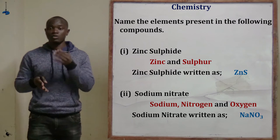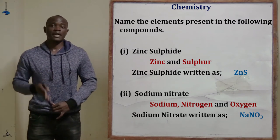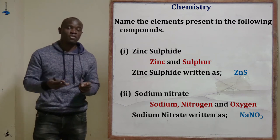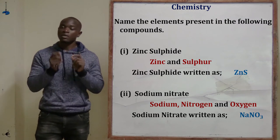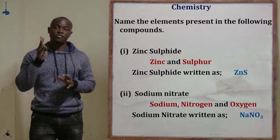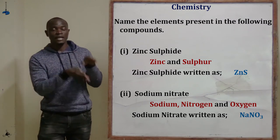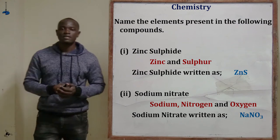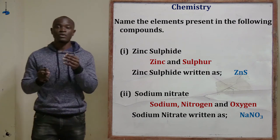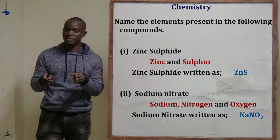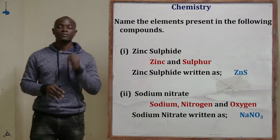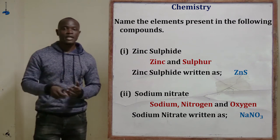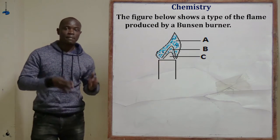Part ii is asking about sodium nitrate. The word nitrate ends with -ate. For nitrate, the full number of oxygen atoms is three. So sodium nitrate has the chemical formula NaNO₃, meaning we have one sodium, one nitrogen, and three oxygen atoms. Therefore the elements present in sodium nitrate are sodium, nitrogen, and oxygen.